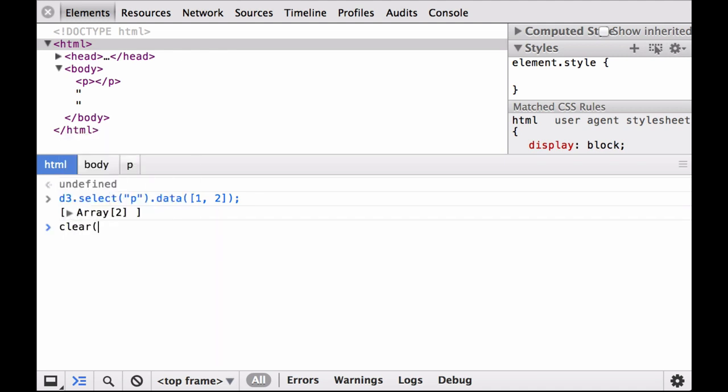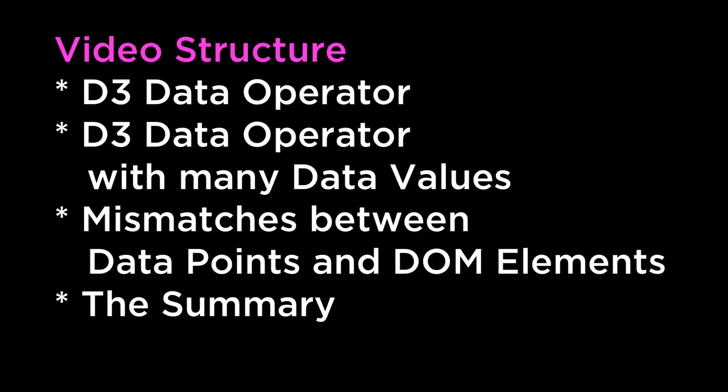In each of these cases there was a mismatch between the number of DOM elements in the selection and the data points passed into the data operator. While the data operator attached the first data point to the first DOM element as expected, strange things happened when there were either extra data points or extra DOM elements. We will cover what happened to these extra data points and extra DOM elements in the next video. This video covered the D3 data operator, the D3 data operator with many data values, mismatches between data points and DOM elements, and the summary.